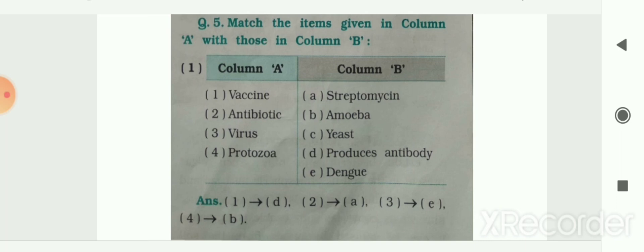Next section: matching. Column A has vaccine, antibiotic, virus, and protozoa. Column B has streptomycin, amoeba, produces antibody, and dengue. Vaccine — produces antibody; antibiotic — streptomycin; virus — dengue; protozoa — amoeba. The answer for this matching is also given to you.